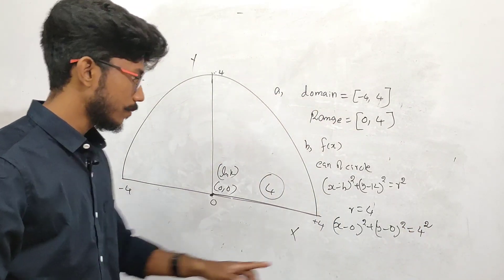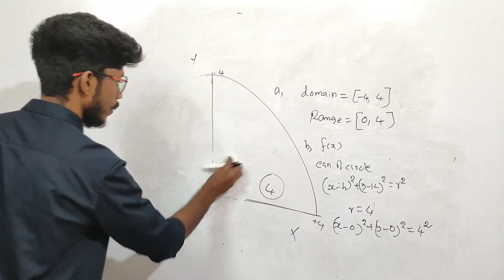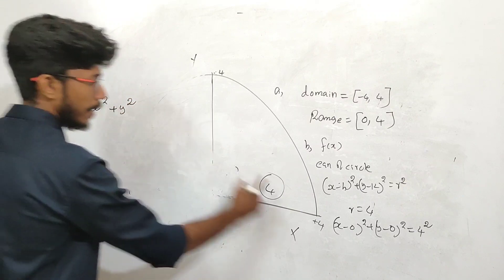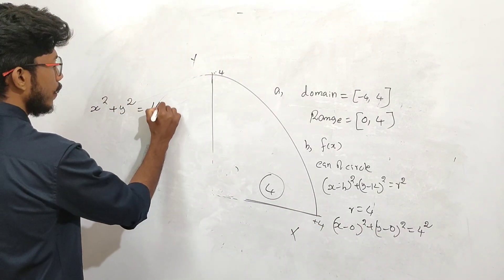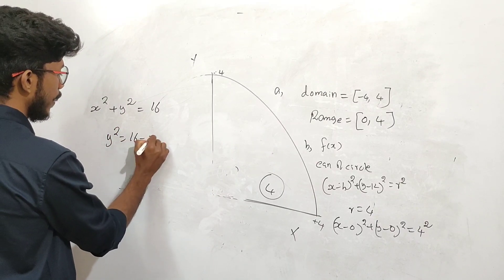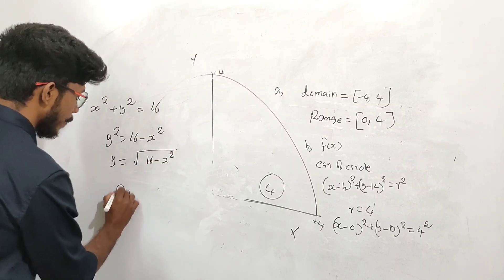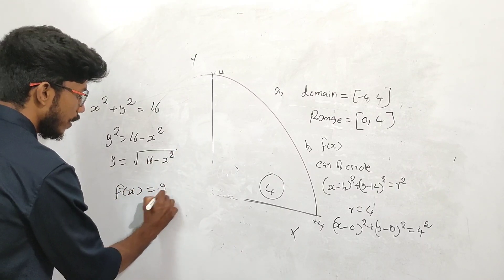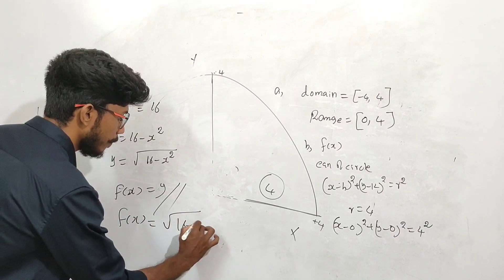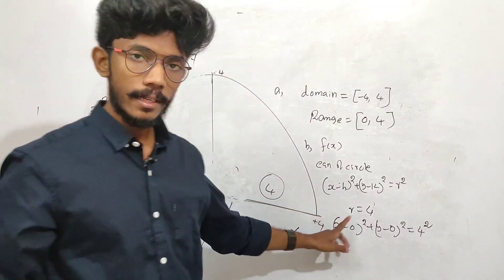Clear? Now, x square plus y square equals 16. Y square equals 16 minus x square, so y equals root of 16 minus x square. We need f of x equal to y. So f of x is equal to root of 16 minus x square. Clear?